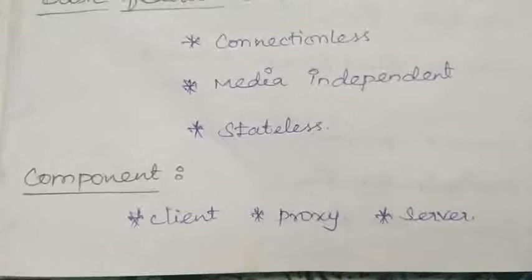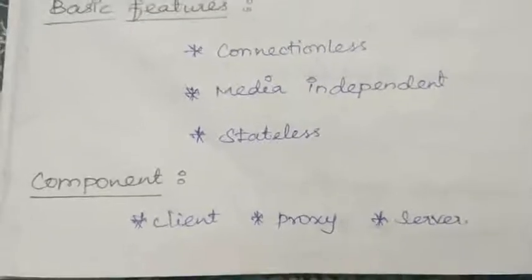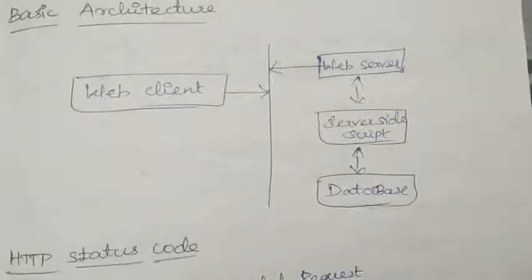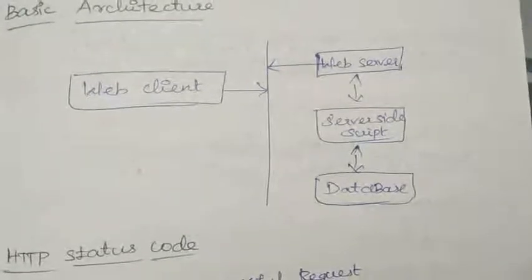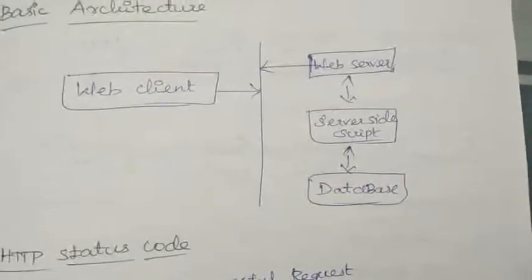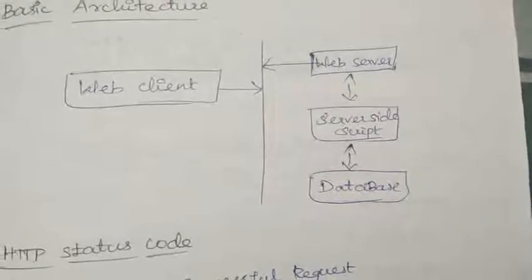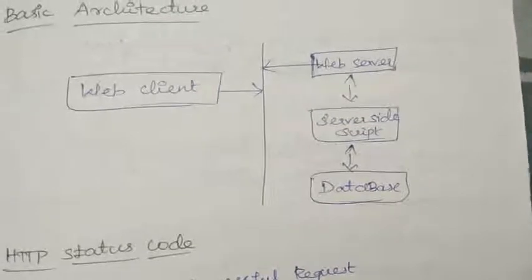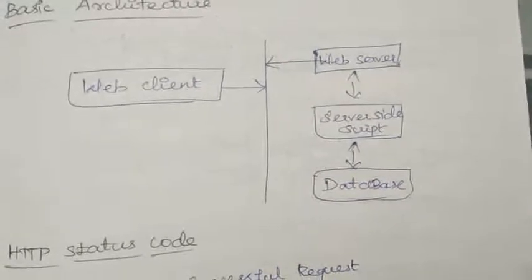HTTP has three components: client, proxy, and server. Let's see about the basic architecture of HTTP. The following diagram shows a very basic architecture of a web application. It is based on client-server architecture.